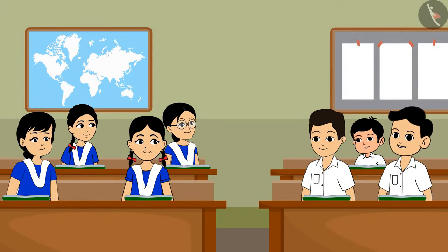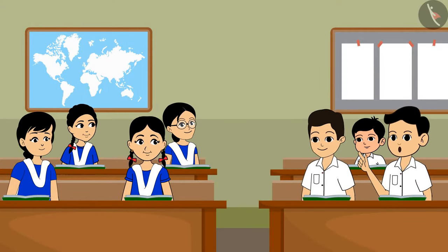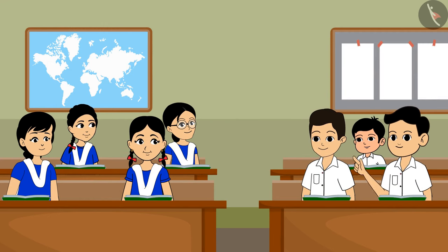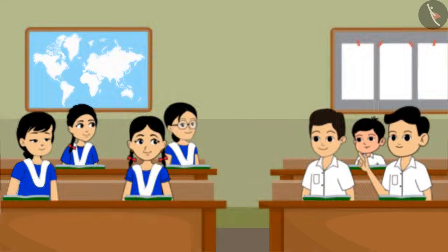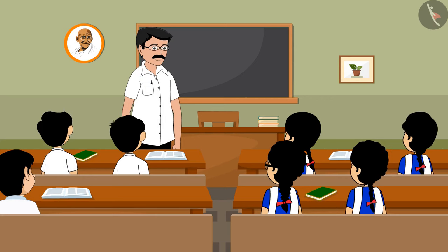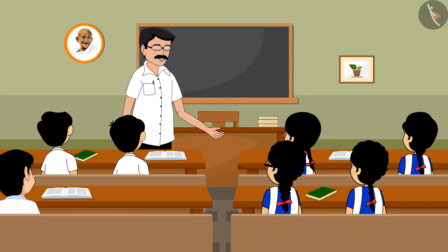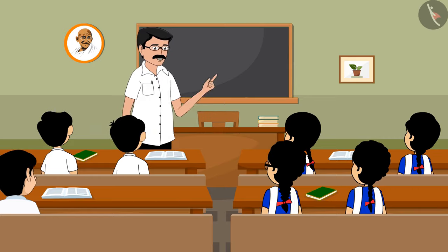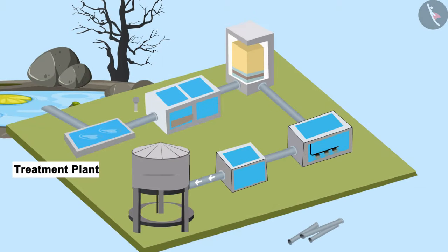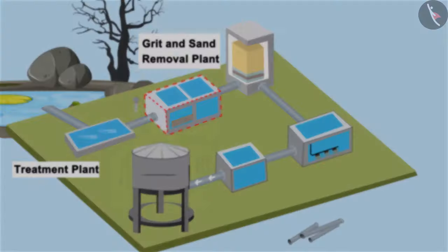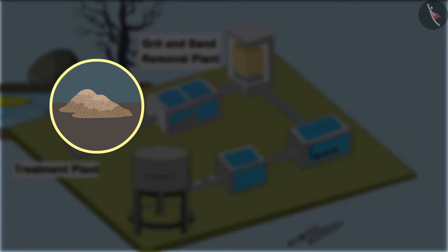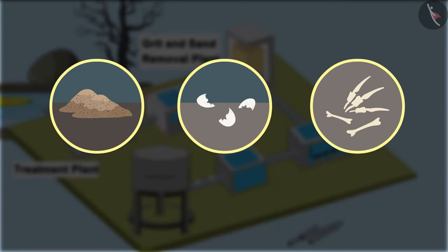That is why we should not put all these things in water. Correct! Due to this filtering, the machines installed in the steps ahead are also saved. This water is then sent to the grit and sand removal plant. Here, sand, egg peels, bone fragments, etc., are separated.